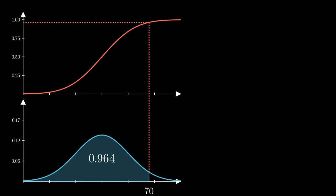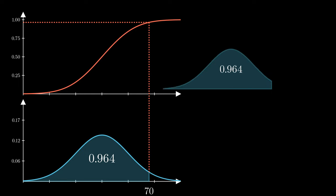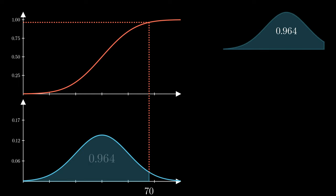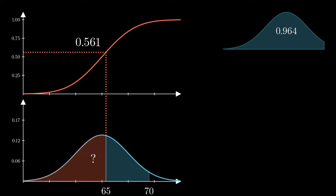So that is the area up to x equals 70. What if I wanted to find the area between 65 and 70 though? Well, let's capture the area up to 70, and then let's capture the area up to 65, which again is another lookup on the CDF. We will find that that is 0.561.